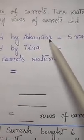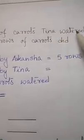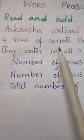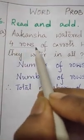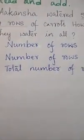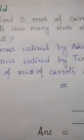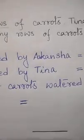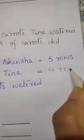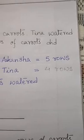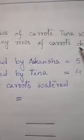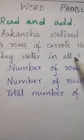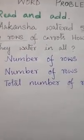Now let's go to the second part. Tina watered four rows of carrots. Now how many rows did Tina water? Four rows. So you will write: number of rows watered by Tina is equal to four rows. Now let's go to the third part of the question: how many rows of carrots did they water in all? So you will have to find the total number.